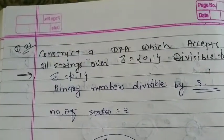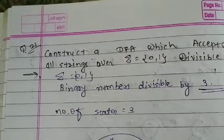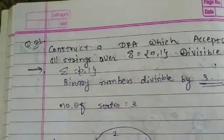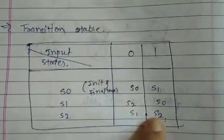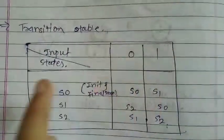First, let's see example number 20 or example number 21. And this is how we can draw divisible by 3. So first, I have created a table here. Input is 0 and 1. And how many states are?